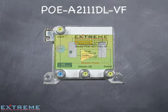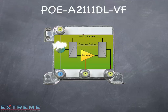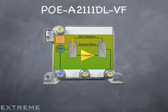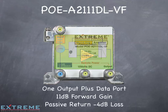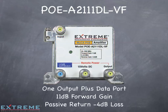The second PoE MOCA amplifier is a one output data plus amplifier with a point of entry filter by the input port and will not allow the MOCA signal to exit the input port. It has 11 dB of gain and passive return with 4 dB of loss.